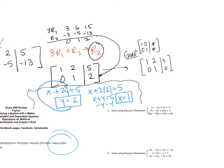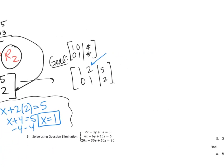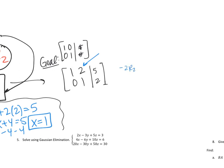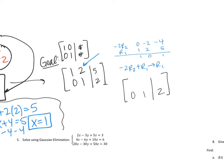To eliminate the 2 in row 1, I take negative 2 times row 2 and add it to row 1. Scratch work: negative 2 times row 2 gives 0, negative 2, negative 4. Adding row 1 (1, 2, 5) gives new row 1: 1, 0, 1. What's nice about Gauss-Jordan in reduced row echelon form is that when I rewrite, I immediately get x equals 1 and y equals 2.